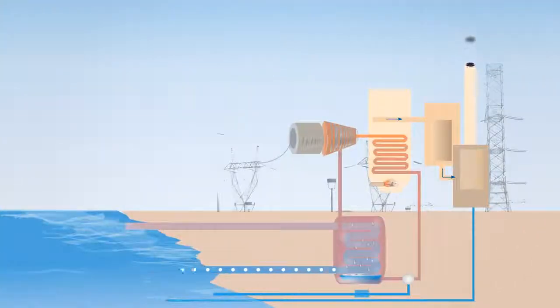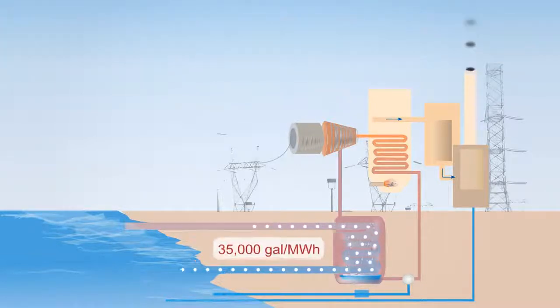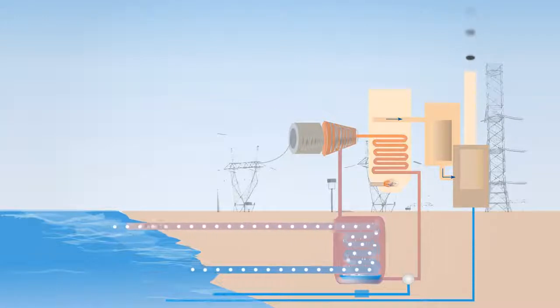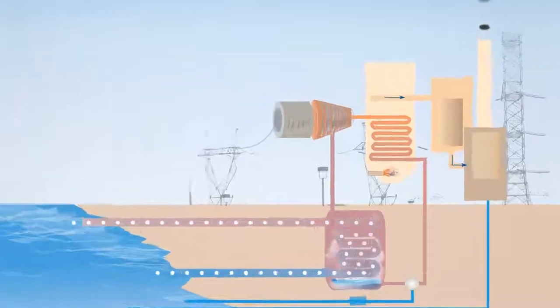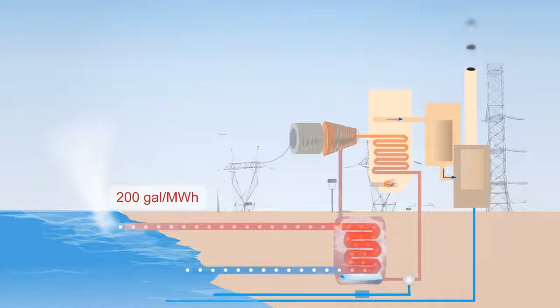A typical coal-fired power plant with a once-through wet cooling system withdraws about 35,000 gallons per megawatt hour of electricity generated, but returns most of it to the source. After the water is withdrawn from the river, lake, ocean, or reservoir, it is used to condense steam in the power plant. In the condenser, it absorbs heat from the steam and is then returned to the source, with 200 gallons lost to evaporation per megawatt hour produced.